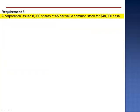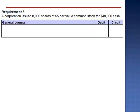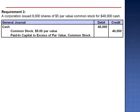Requirement 3. A corporation issued 8,000 shares of $5 par value common stock for $48,000 in cash. This transaction increases assets and the paid-in capital portion of stockholders' equity. The journal entry is a debit to cash for the amount received, $48,000. Credit the common stock $5 par value account for the par value of 8,000 shares, $40,000, and the balance is credited to paid-in capital in excess of par value on common stock.